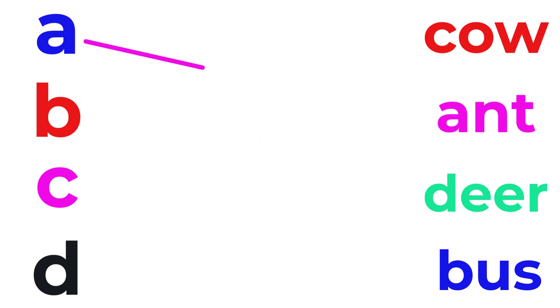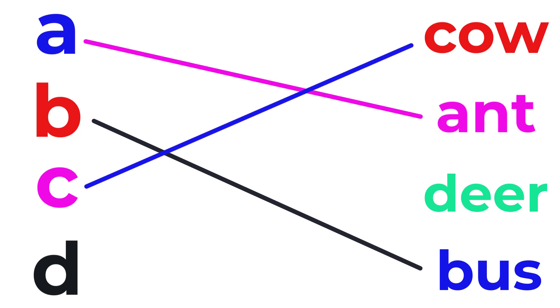A for Ant, B for Boss, C for Cow, D for Deer